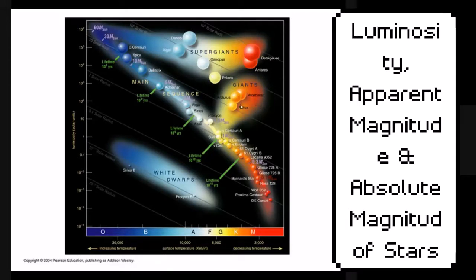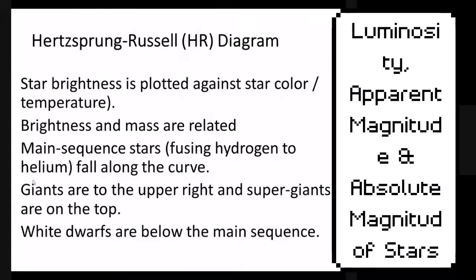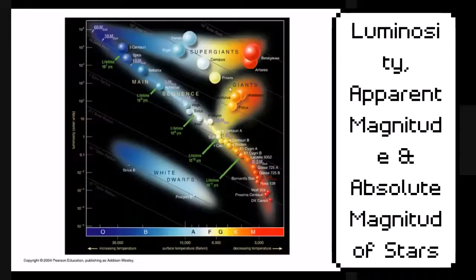Once you get into giants and supergiants, things change a bit. You could have a red giant with the same mass as the sun, but it's going to have more luminosity because it has a larger radius — a bigger star just shines brighter because there's more of it, even with the same mass. For supergiants, same idea: they have an even larger radius, and as radius increases they cool down, giving them a lower temperature than giants. Finally, white dwarfs are below the main sequence — they have lower luminosity than most main sequence stars, but also a higher temperature. Sirius B, for example, is almost 30,000 Kelvin.